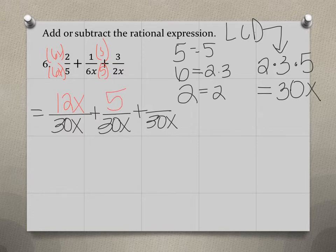So we're going to multiply the top also by 5. And then 2x times 15 equals 30x. So we're going to multiply the top also by 15 to give us 45.